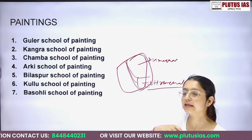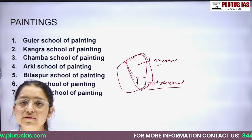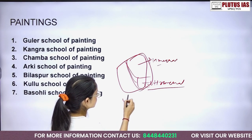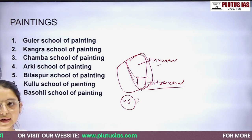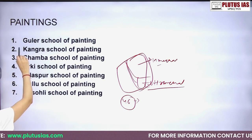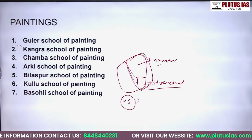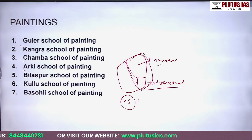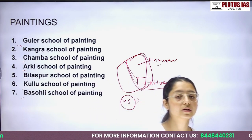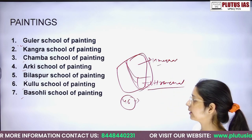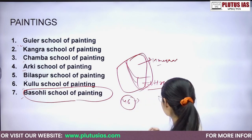These hilly states were divided into small principalities. When we talk about Himachal, we have 46 small principalities. The schools of painting include the Guler School, Kangra School, Chamba School, Arki School, Bilaspur School, Kullu School, and Basoli School. If asked which is the oldest school, the Basoli School of Painting is the oldest — it belongs to the pre-Mughal period.